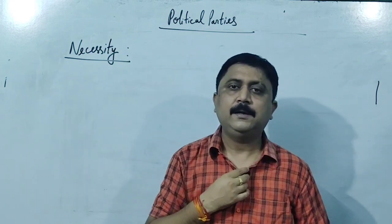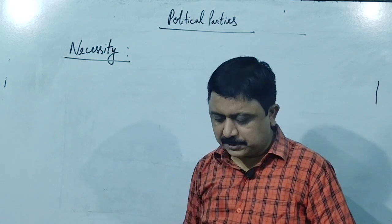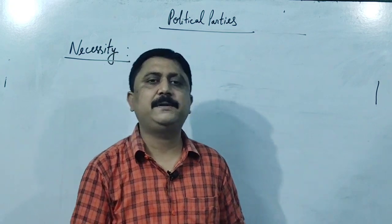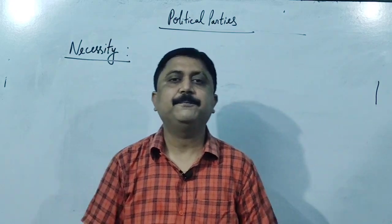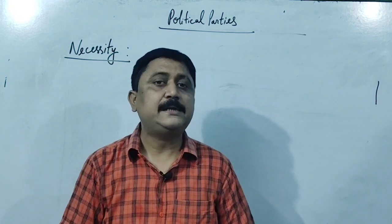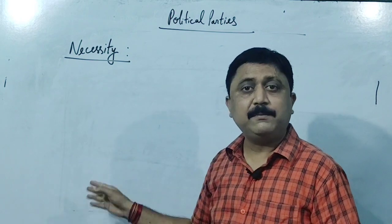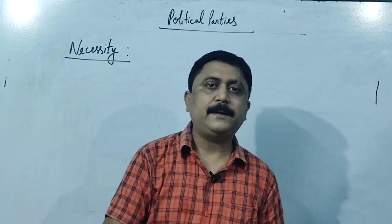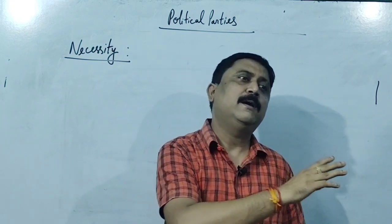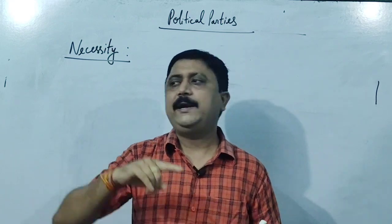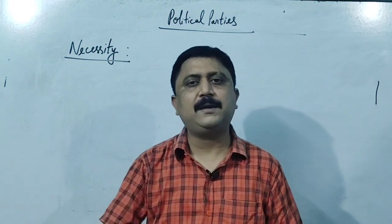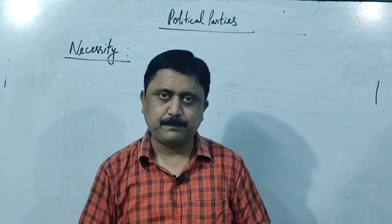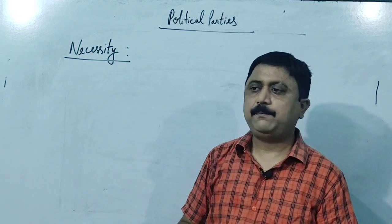In the NCRT book, the list of functions actually answers the question of necessity as well. The functions, when taken as a basis, give us our answers for necessity too - for example, necessity to form and run government. It is quite easier for a common citizen to interact with the government machinery through political parties, through a local leader, rather than meeting directly with the chief minister or prime minister. So it becomes easier for us to convey messages.